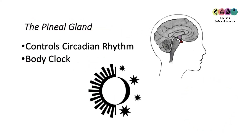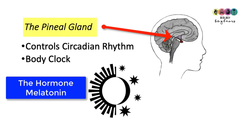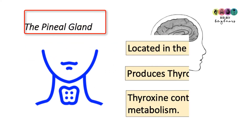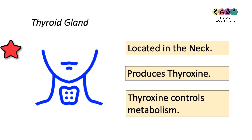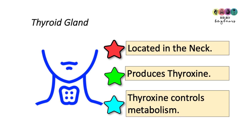Another very tiny gland in the brain is the pineal gland, which makes the hormone melatonin. Melatonin controls your circadian rhythm — your body clock. The thyroid gland is probably one of the most important on your course. It is located in the neck and produces the hormone thyroxine, which controls metabolism.